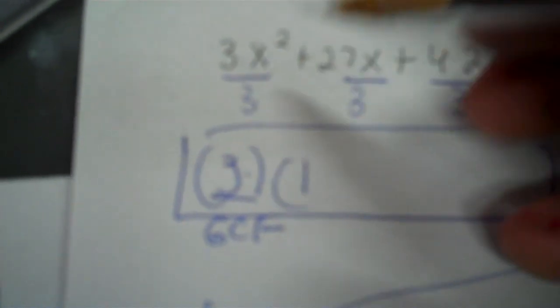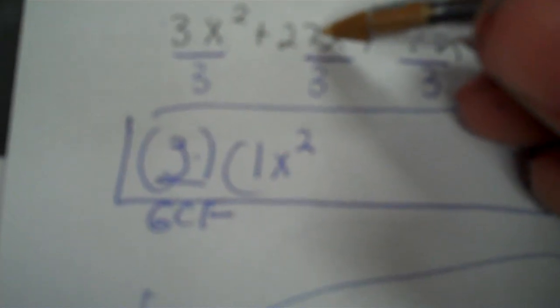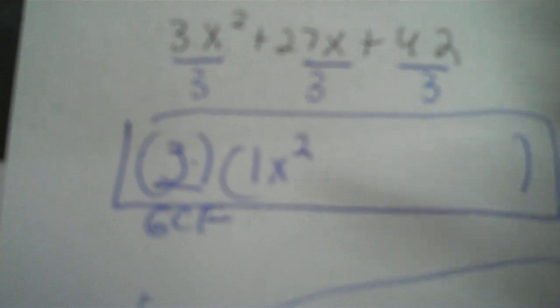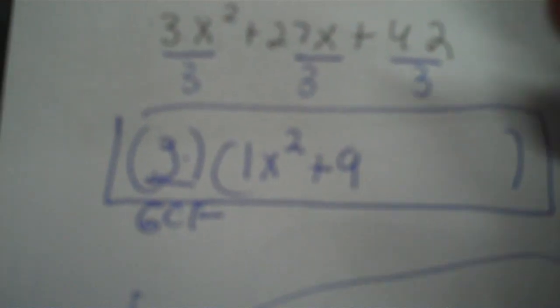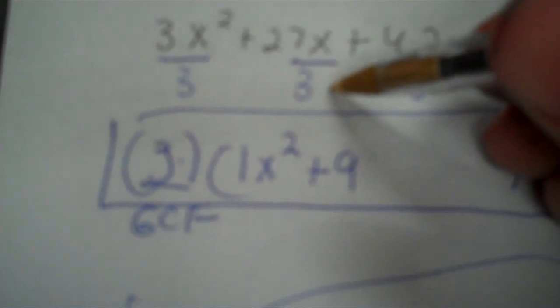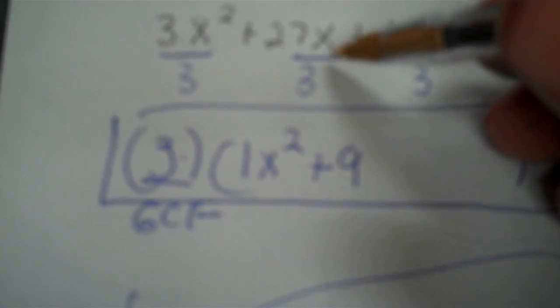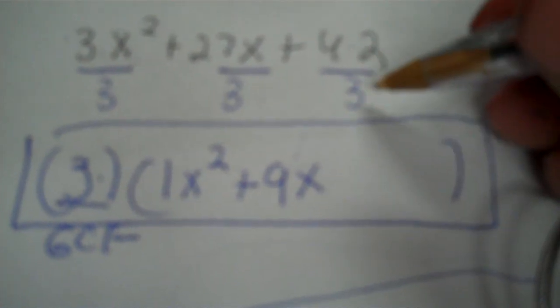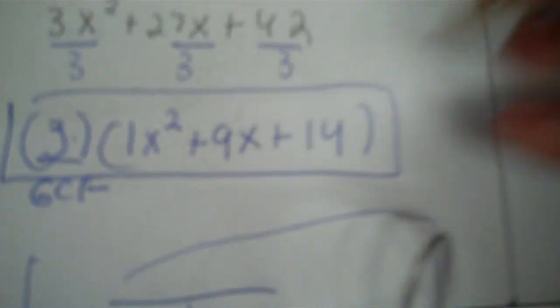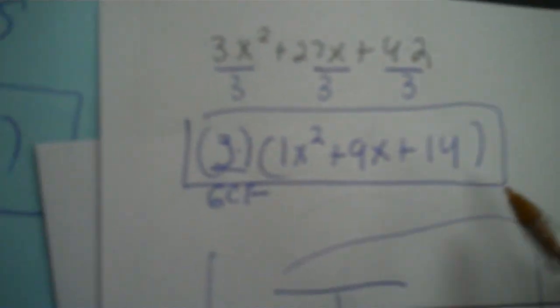3 divided by 3 is 1. Since we're not putting an x underneath, that x will stay to the second power. 27 divided by 3 is 9 — it's positive, so put the positive sign. That x stays too. 42 divided by 3 is 14, positive 14. Now take your GCF of 3 over to the side.